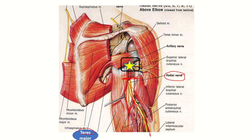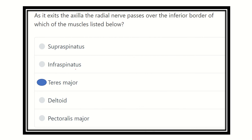The upper part of the triangular space is bounded by the teres major muscle, and the lateral and medial parts are bounded by the heads of the triceps, with the apex formed by the meeting point of the two heads of triceps. So our final answer is teres major — the radial nerve passes over the inferior border of teres major.